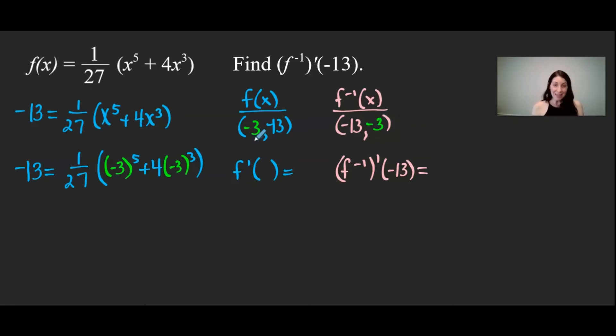Now because we find, just a reminder, derivatives at x values for f of x, we're going to calculate f prime of its x value, which is negative 3. In order to find this, I first have to find f prime of x.